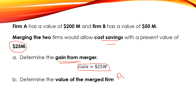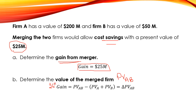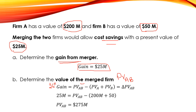For Part B, we determine the value of the merged firm: PV(AB). The gain is equal to PV(AB) minus the present value of Firm A alone minus the present value of Firm B alone. The gain is 25 million dollars, PV(A) is 200 million dollars, and PV(B) is 50 million dollars. Solving for the only unknown, PV(AB) equals 275 million dollars.